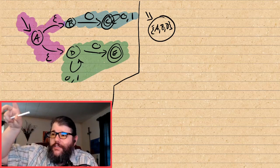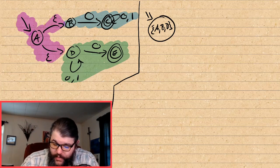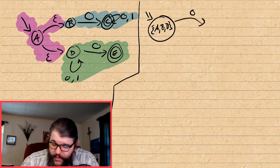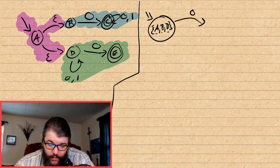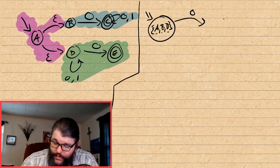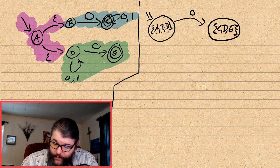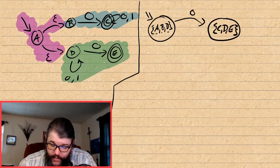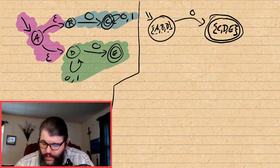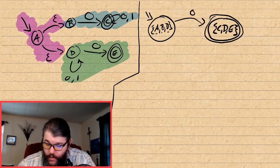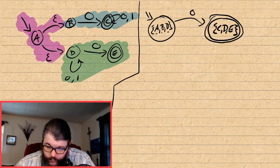When I see a 0, I consider where each of A, B, D goes. A falls off. B goes to C. D goes to C, D, and E. So on a 0 from the start state, we go to {C, D, E}. This is an accept state because both C and E are accept states — if any of the states in the set is an accept state, the whole set is an accept state.